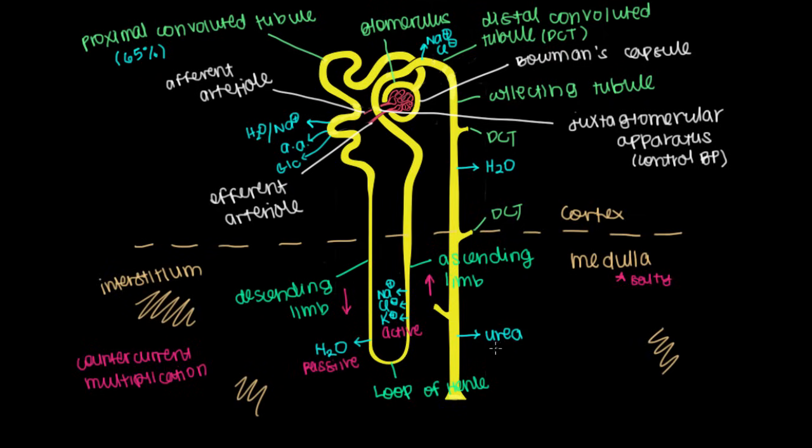And another thing we reabsorb that I'll show deep in the medulla right here is urea. Urea is one of the main waste components that we actually pee away. But sometimes the kidneys like to hold on to urea to increase the osmolarity in the medulla to help drive water reabsorption in the loop of Henle.